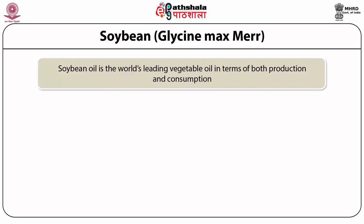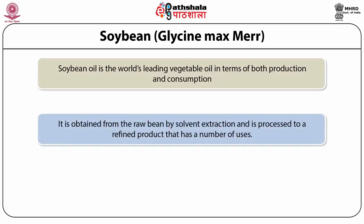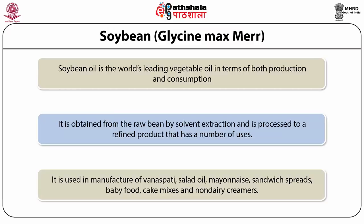Soya bean: Soya bean oil is the world's leading vegetable oil in terms of both production and consumption. It is obtained from the raw bean by solvent extraction and processed to a refined product that has a number of uses. It is used in manufacture of vanaspati, salad oil, mayonnaise, sandwich spreads, baby food, cake mixes and even non-dairy creamers.